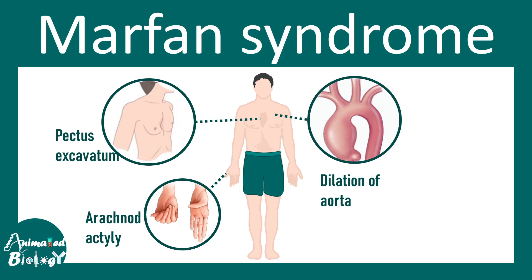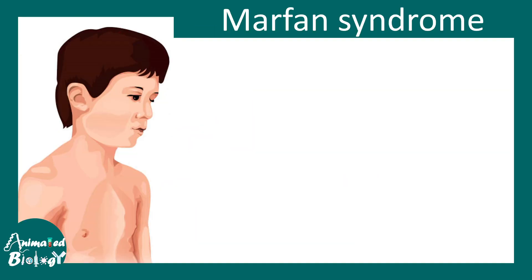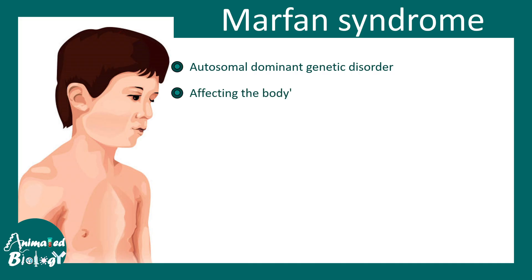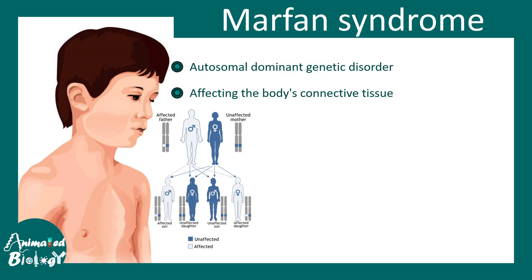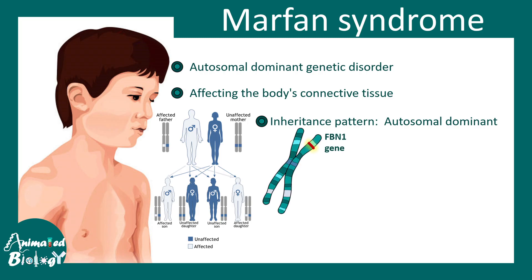In this video we'll quickly look at Marfan syndrome. Marfan syndrome is a genetic disorder which is autosomal dominant in nature — it affects the body's connective tissues. Being autosomal dominant means there is a 50% chance that the next generation would be affected if one of the parents is affected. The inheritance pattern is autosomal dominant and the FBN1 gene is mutated in this case.